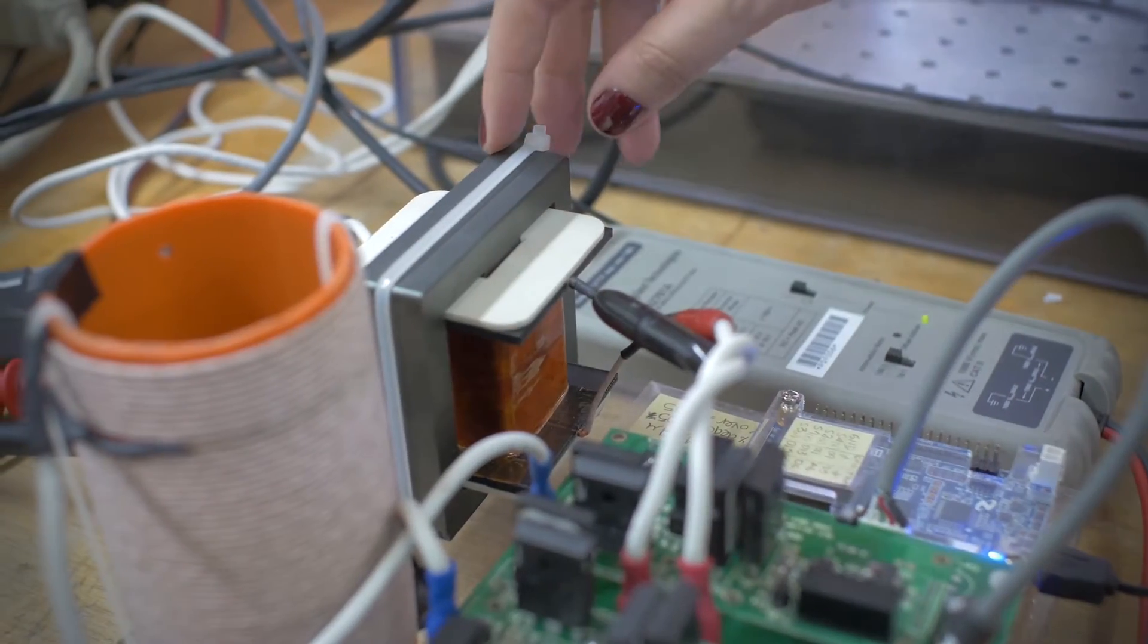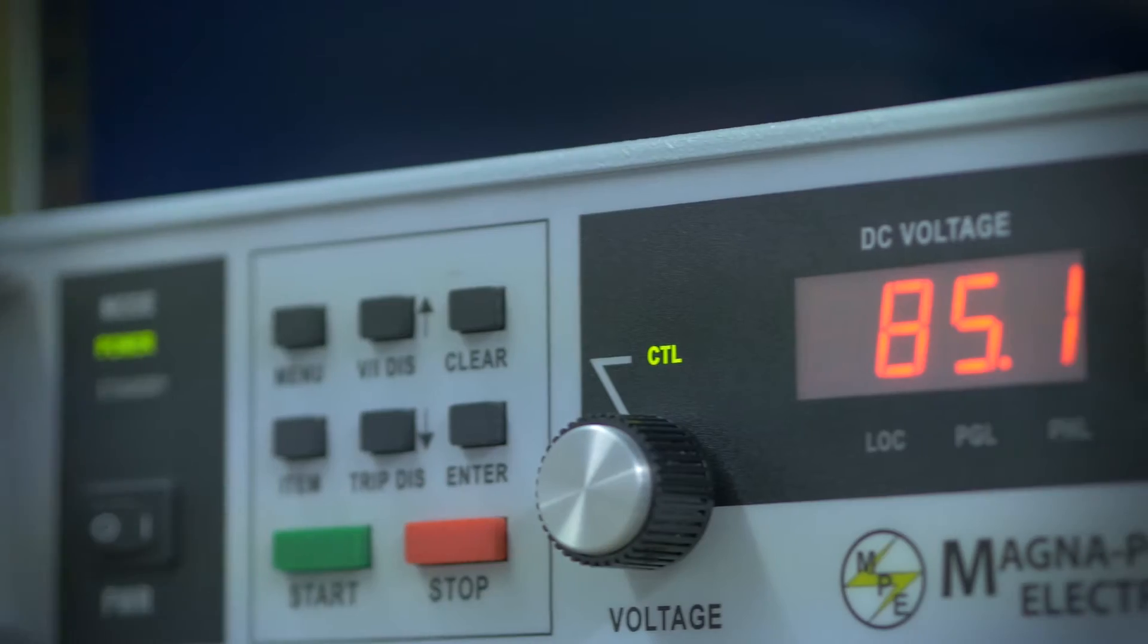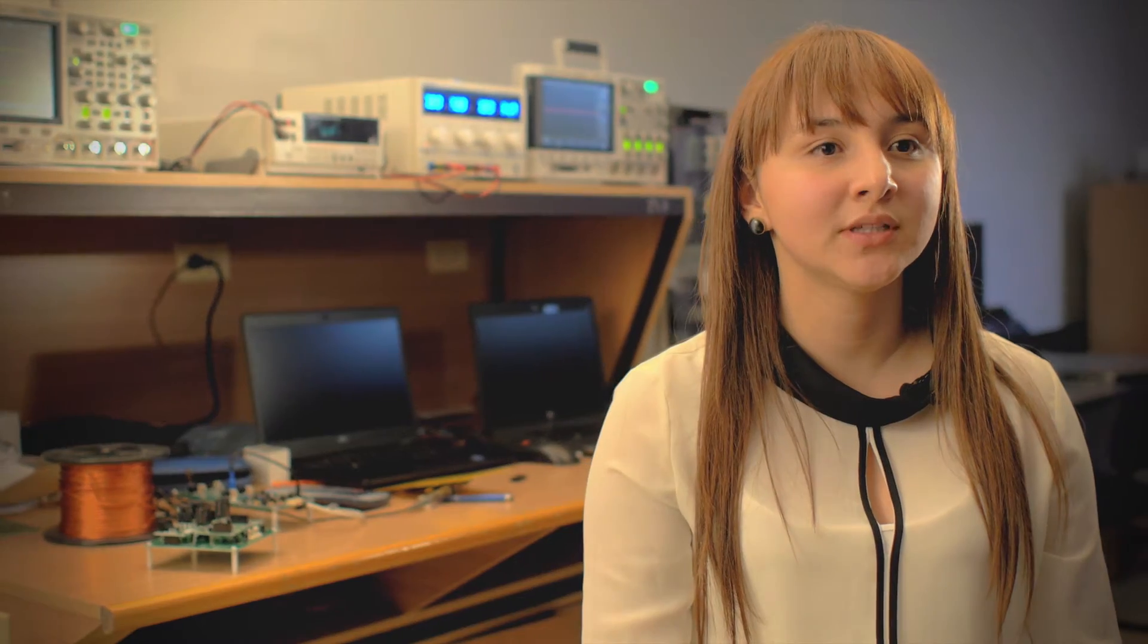Silicon carbide devices allow sizing the transformer with a lower turns ratio than when using silicon ones. This decreases the effect of the transformer parasitic elements. The input of the converter is 85 volts for a peak output voltage of 3.5 kilovolts.